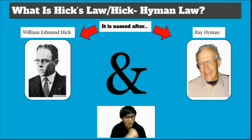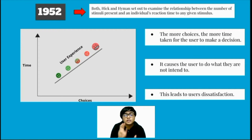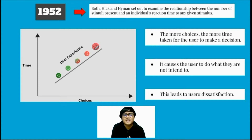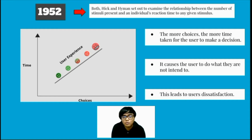Hick's Law, or the Hick-Hyman Law, is named after British psychologist William Edelman Hick and American psychologist Ray Hyman. Back in 1952, these two researchers set out to examine the relationship between the number of stimuli that occur and the reaction time of an individual to any given stimulus. As expected, when the number of stimuli to choose from increases, the longer it takes for the user to make a decision. Users with too many choices have to take more time to interpret and decide, which leads to something they surely don't want.